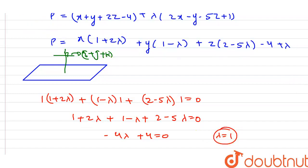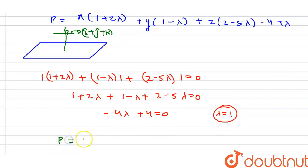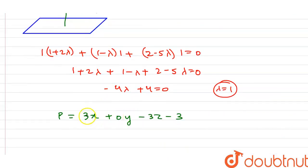Now what will be the plane equation? We will put lambda equals 1, and we will get 3x plus 0y minus 3z minus 3. So this is the required plane equation.